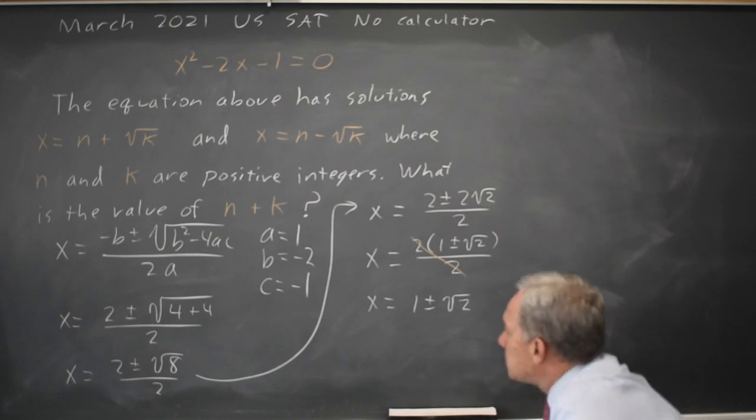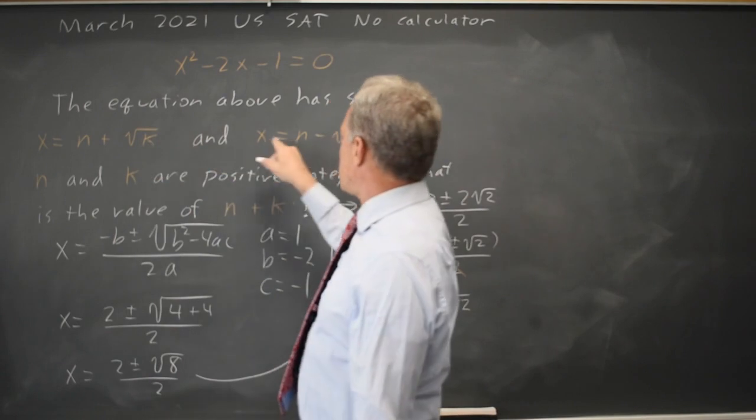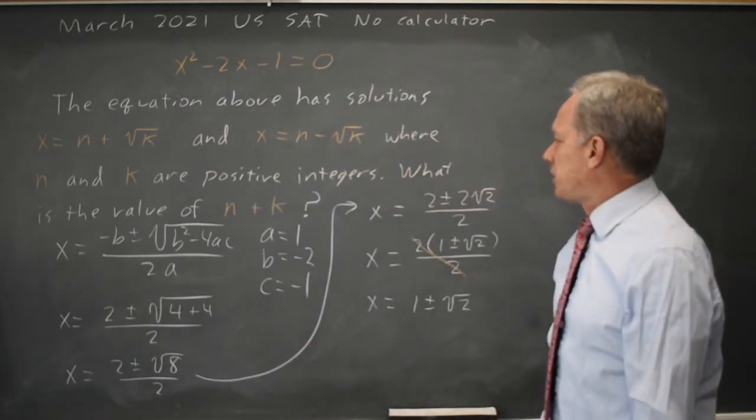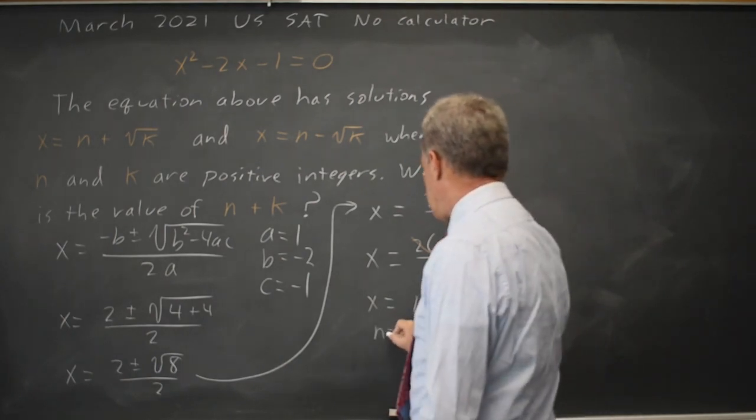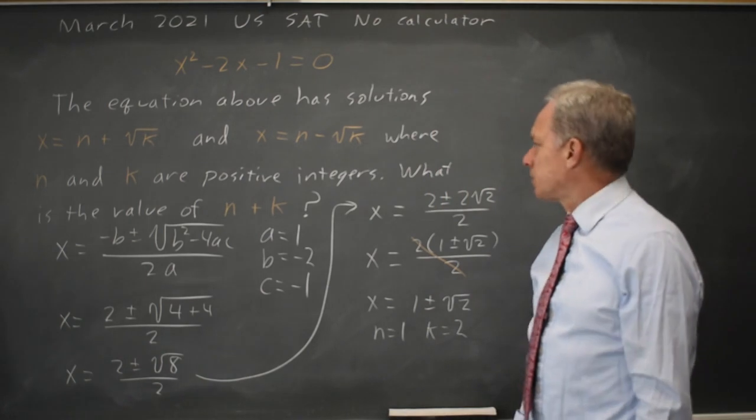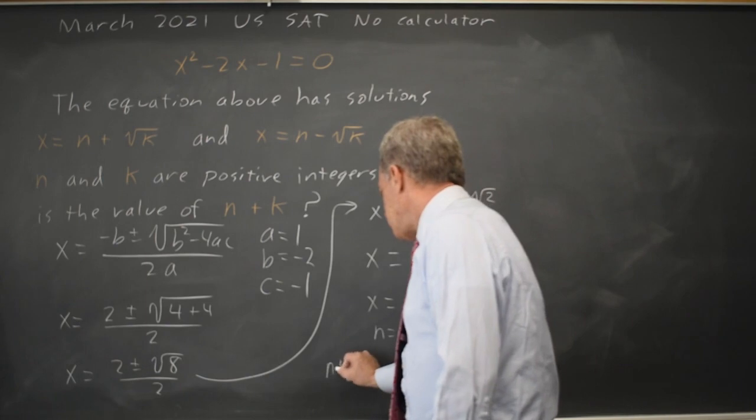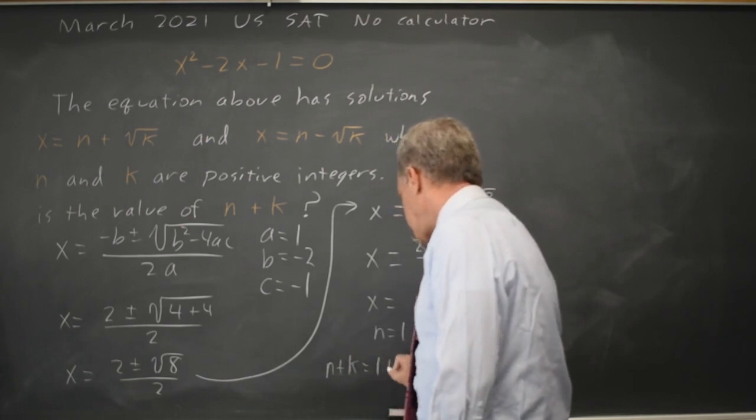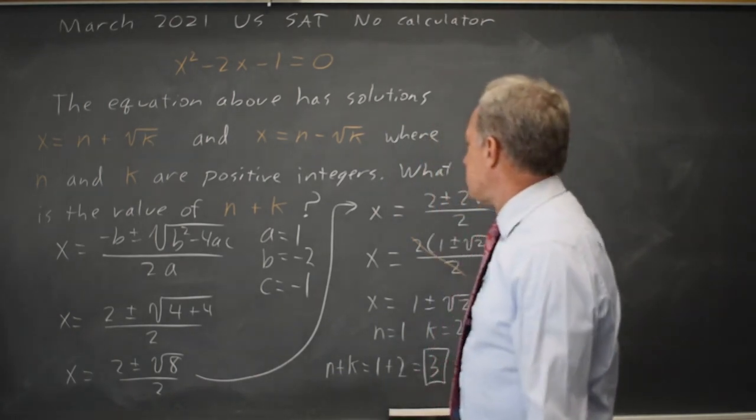Now let's take a look at the question they're asking. The solutions are N plus root K and N minus root K where N and K are positive integers. So N equals 1 and K equals 2. What is the value of N plus K? N plus K equals 1 plus 2 equals 3, so our answer would be 3.